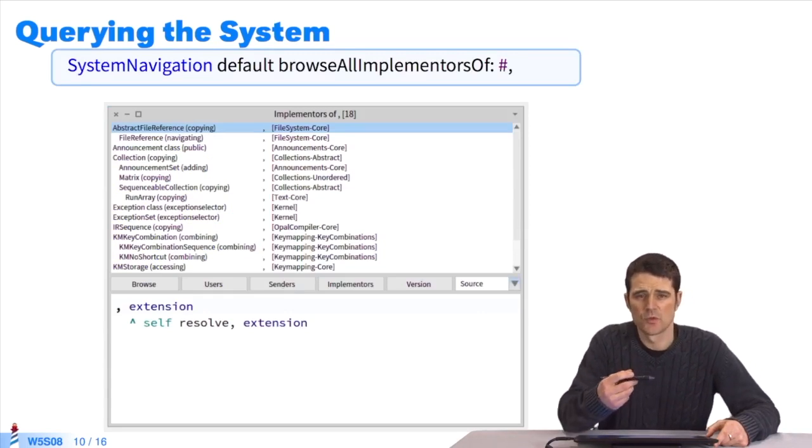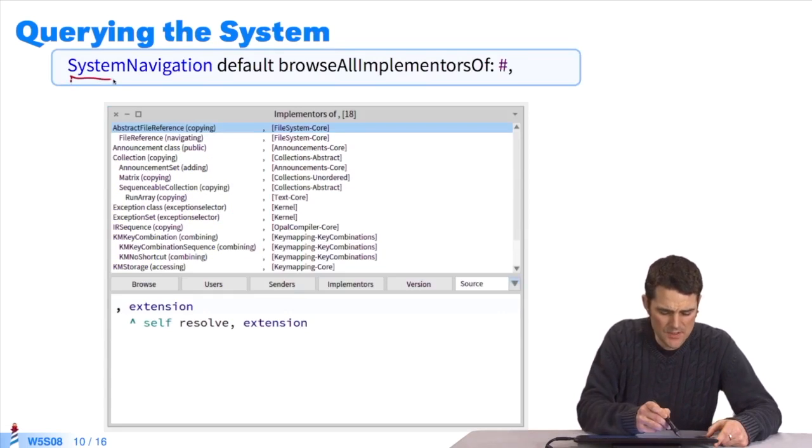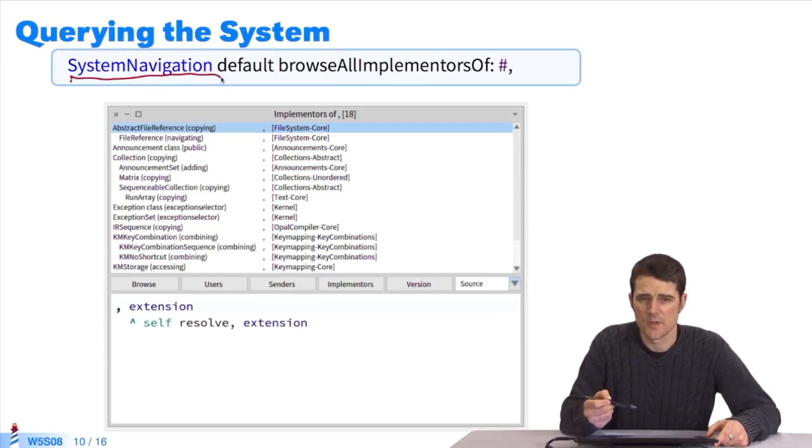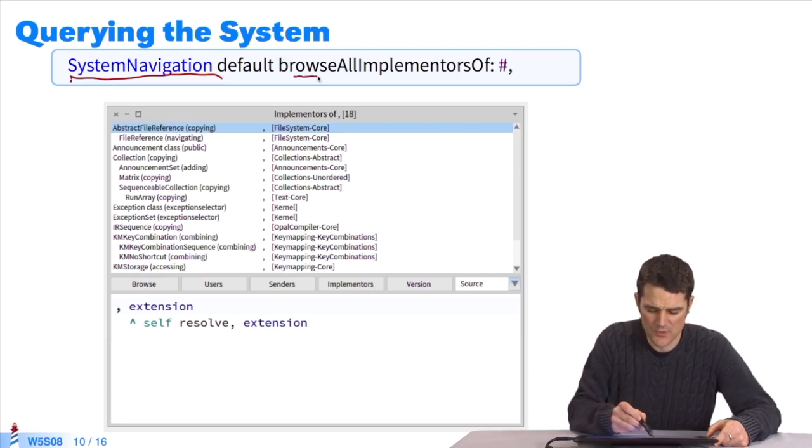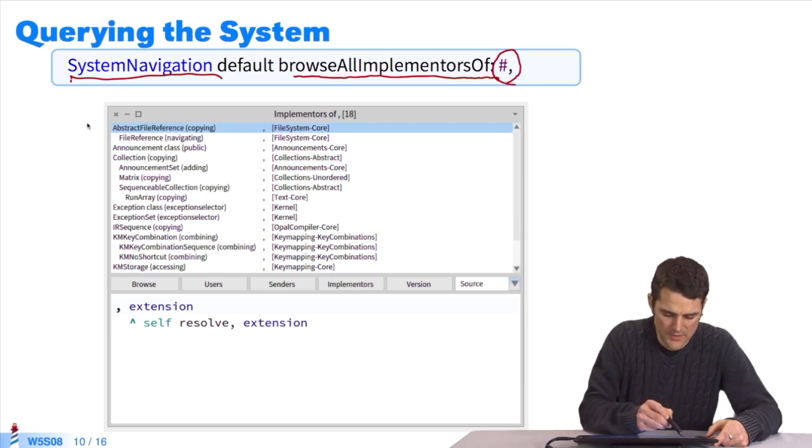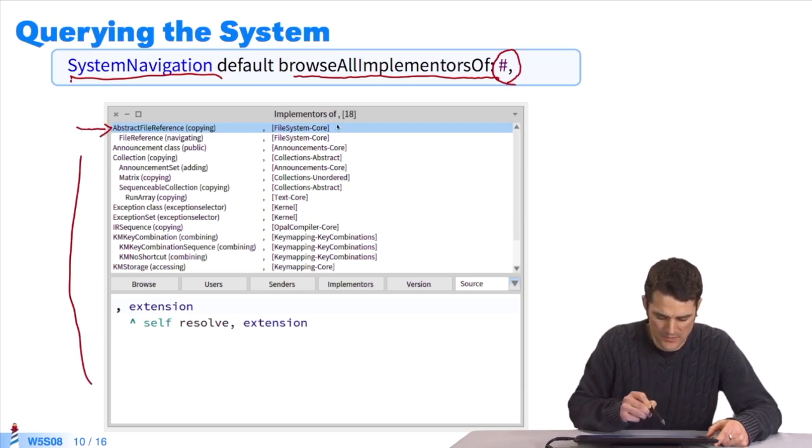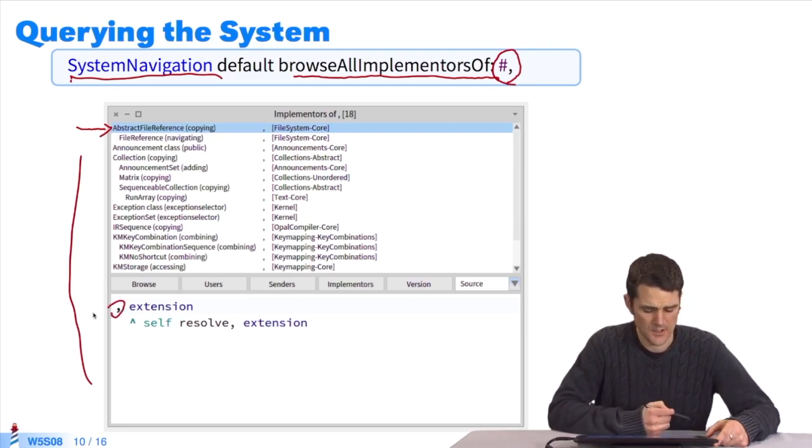All of this allows us to build top-level tools, such as the navigation system here. This navigation system lets us show or browse the system. For example, I can see all the classes that implement the method hashtag. Here, we've a window that will open. We'll see all the implementers of hashtag, so the class abstract file reference implements the method hashtag. I've a list of all the classes implemented by this method.